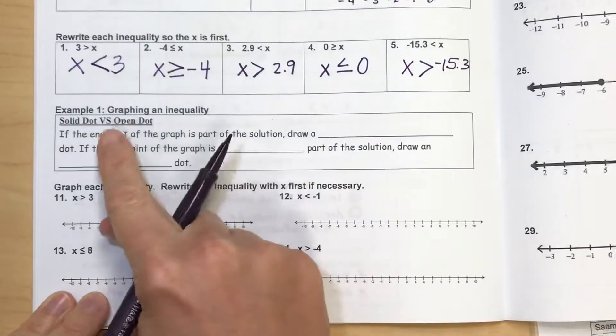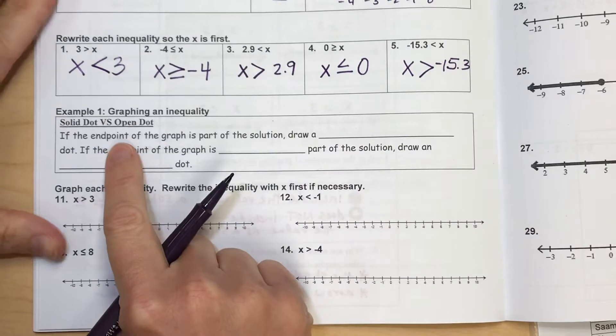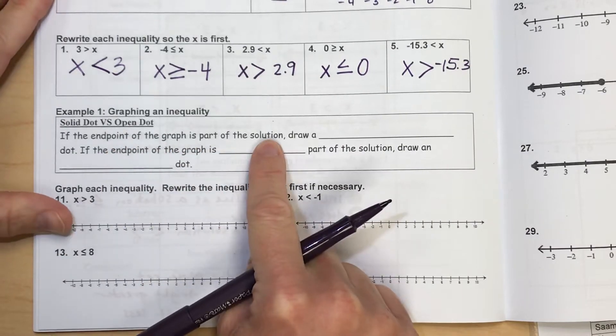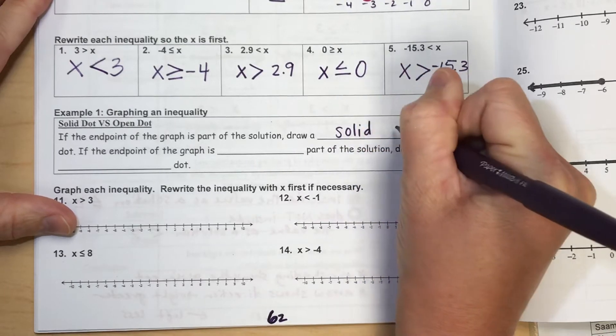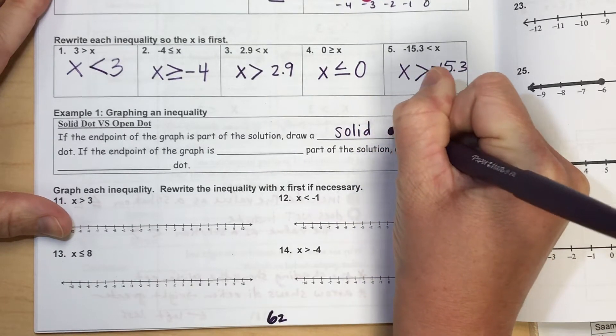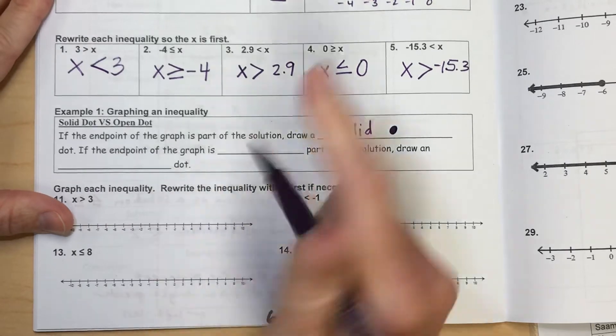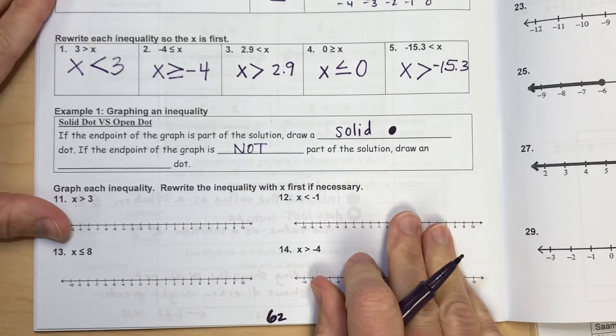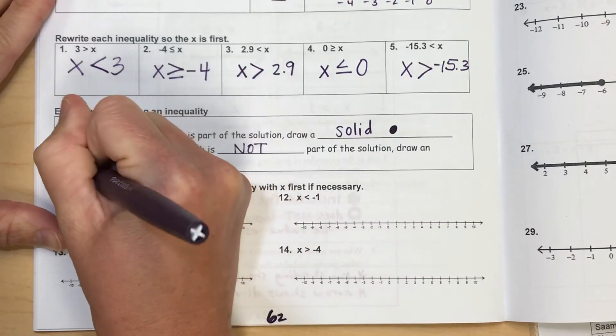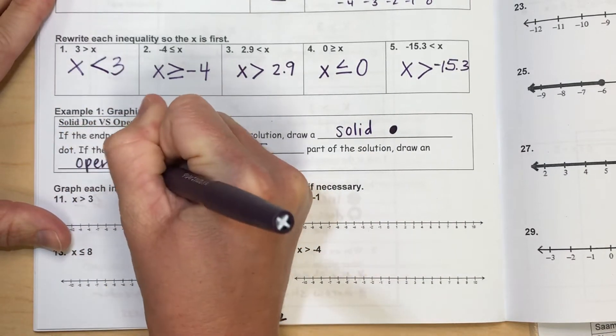But for this box right here, if the endpoint of the graph is part of the solution, what we want to have is a solid filled in dot all the way. And if the endpoint of the graph is not a part of your solution set, then what you're going to do is draw an open dot.